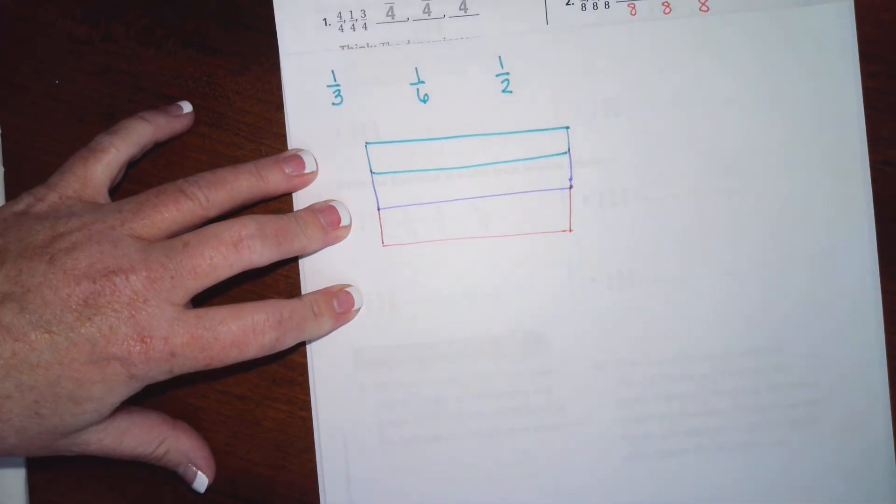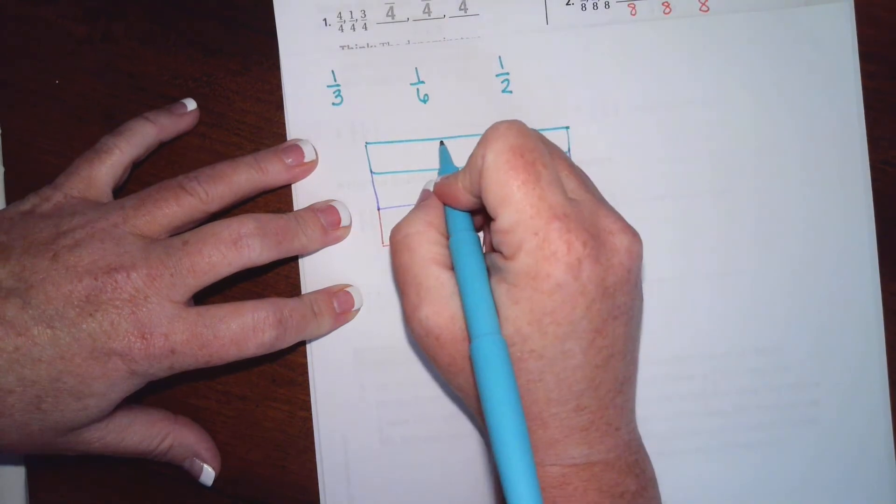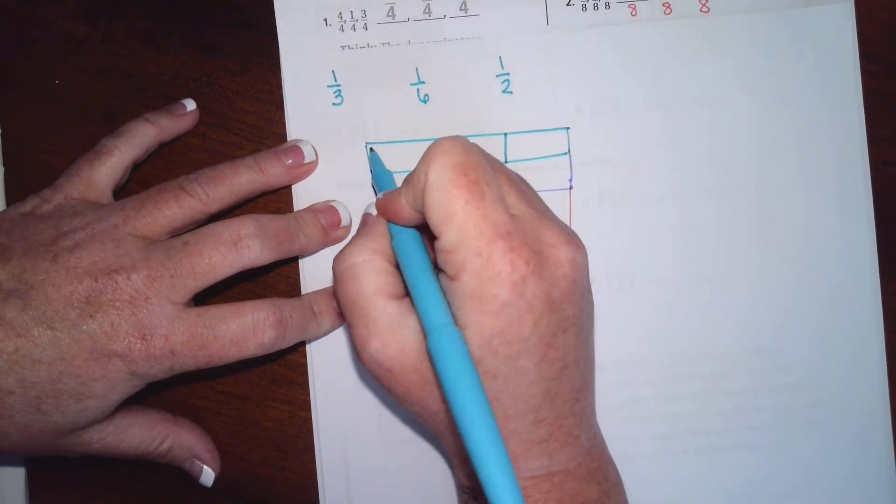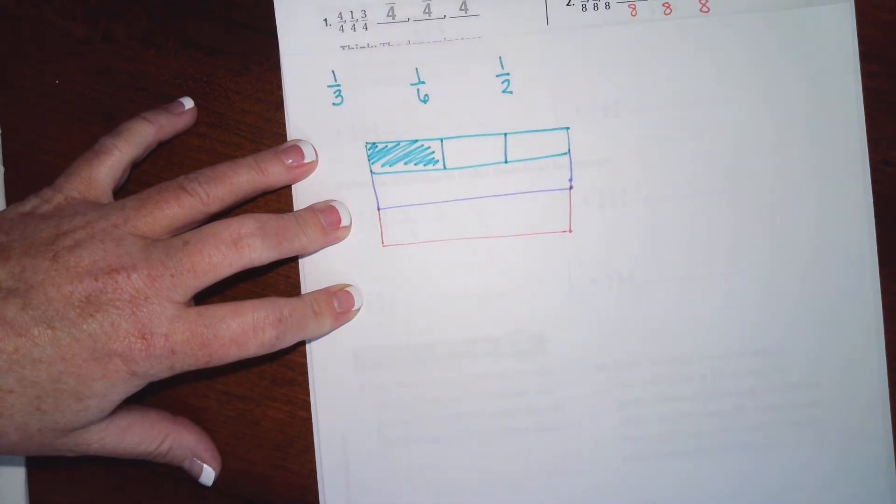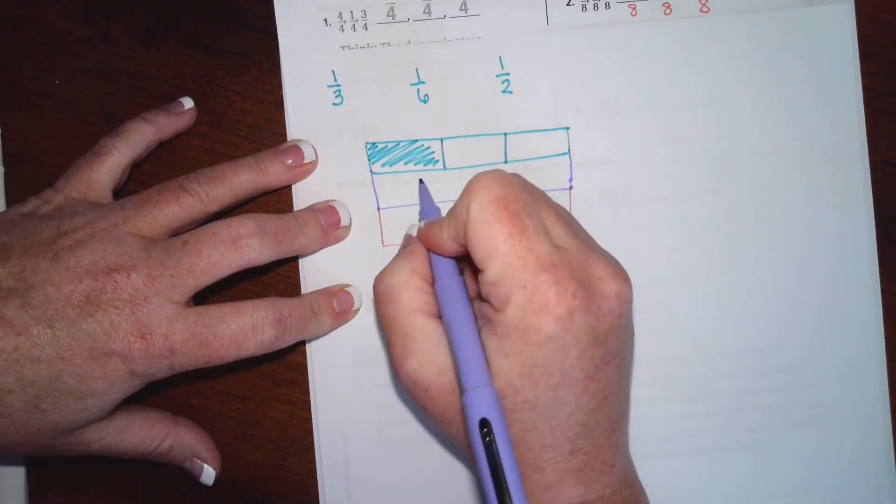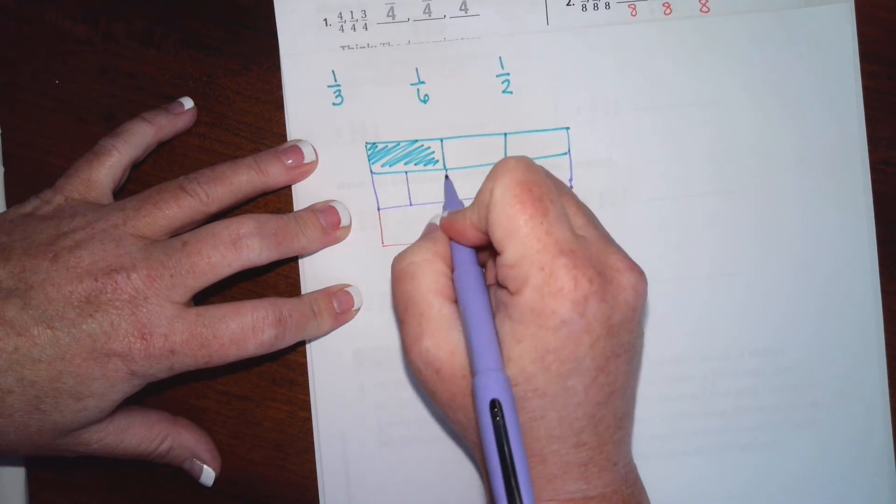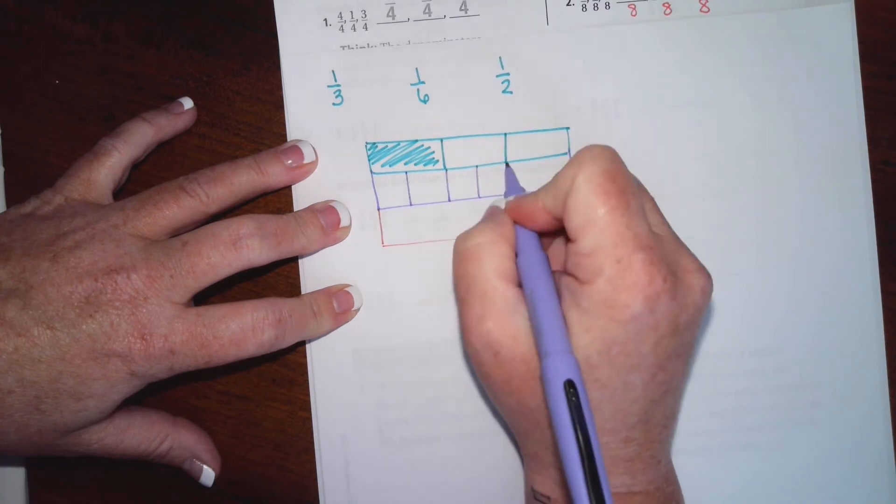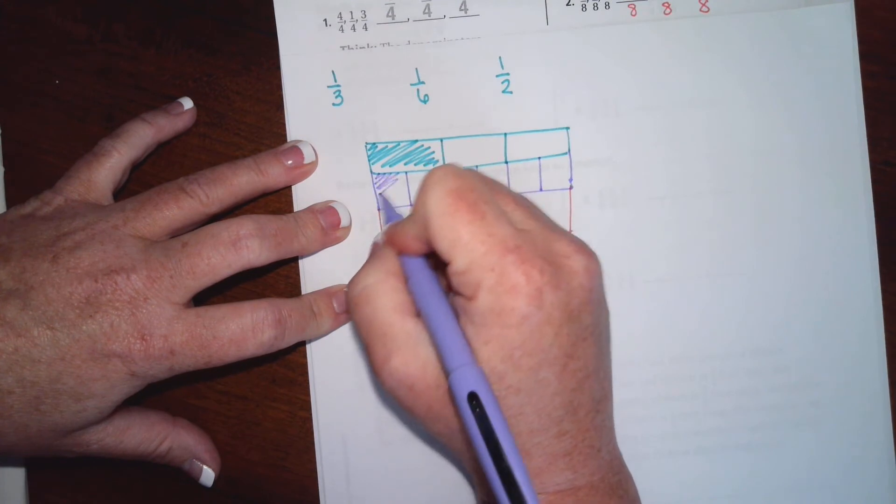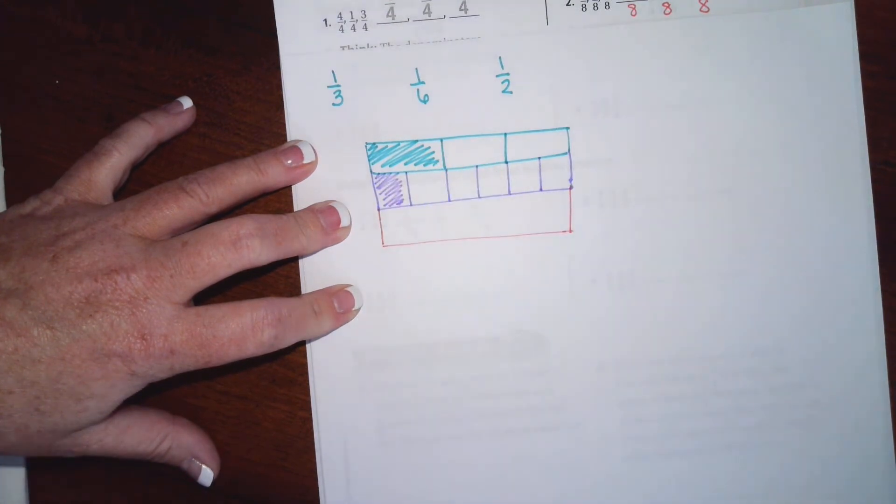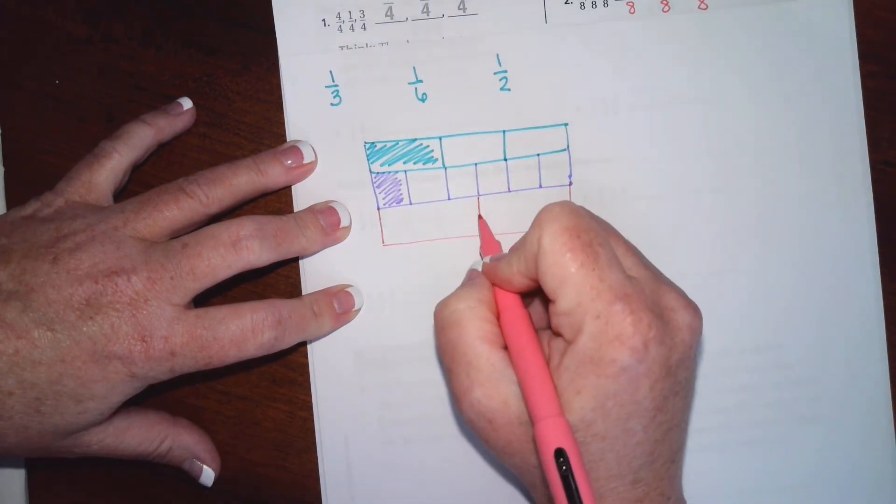Those are all about the same size, obviously, and Cleo's not an artist. The first one I'm going to break up into thirds, and one of those is going to be colored. The second one I'm going to break up into six, and one of those will be colored. The last one I'm going to break up into halves.